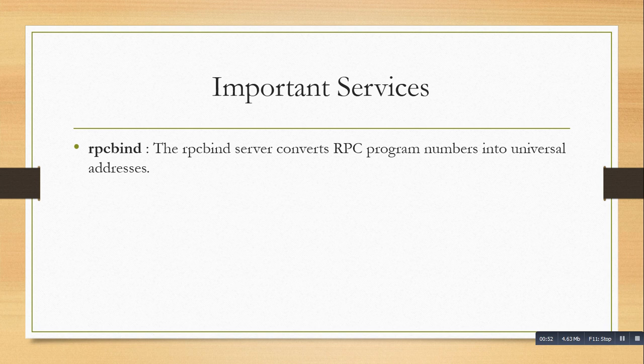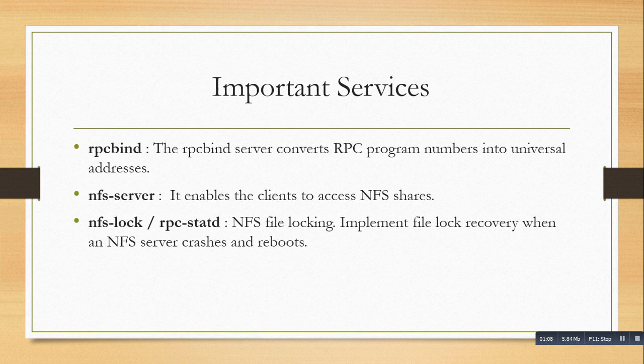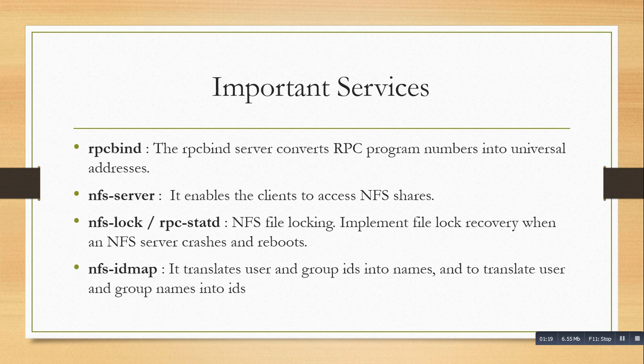RPC bind is the most important service. The RPC bind server converts RPC program numbers into universal addresses. The NFS server enables the client to access the NFS server. NFS lock and RPC state handle NFS file locking and implement file lock recovery when the NFS server crashes and reboots. NFS ID map translates user and group IDs into names and vice versa.